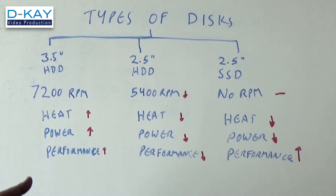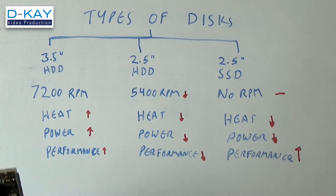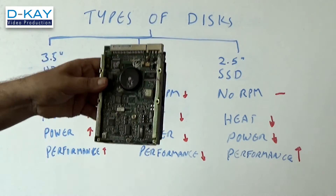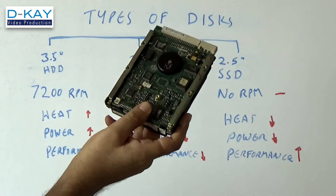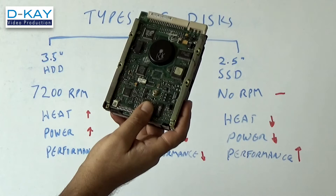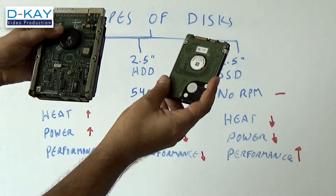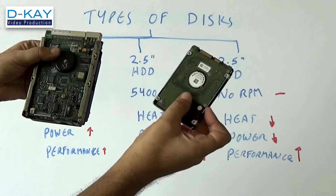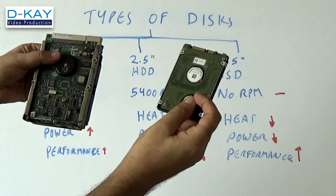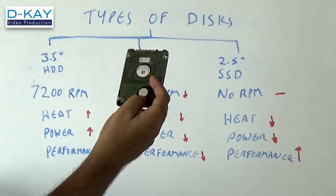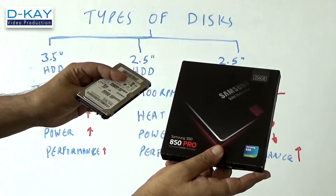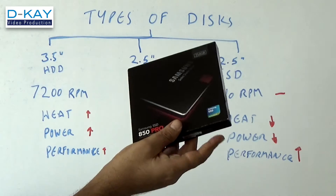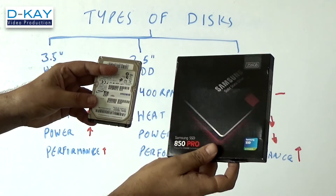Let's look at how exactly these drives look. This is the 3.5 inch hard disk drive used in the desktop computer — it is big. When it comes to the laptop, we use the 2.5 inch disk, which is much smaller. We are going to unbox the SSD, which is also 2.5 inch in size, but the way it is going to perform is going to be much better.